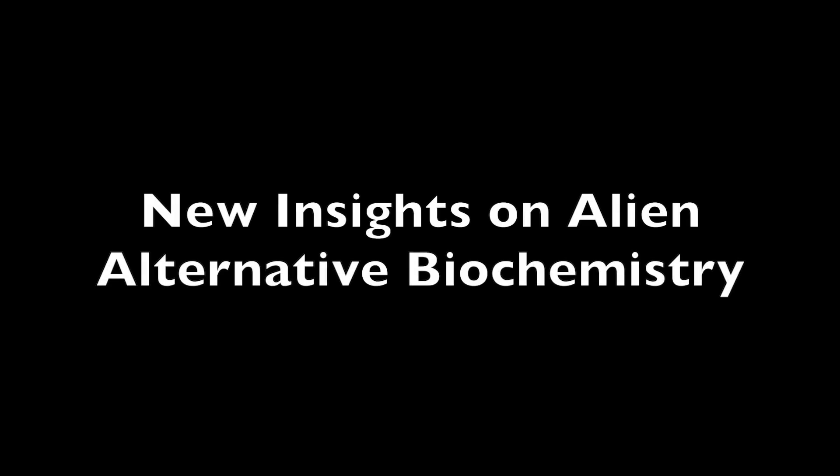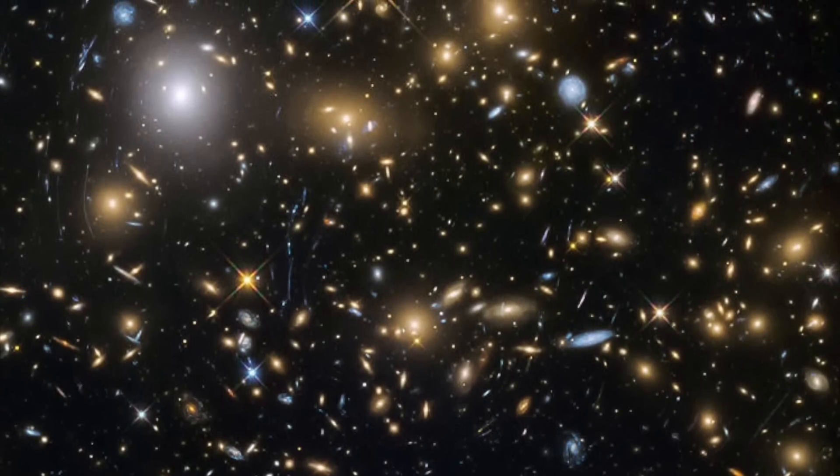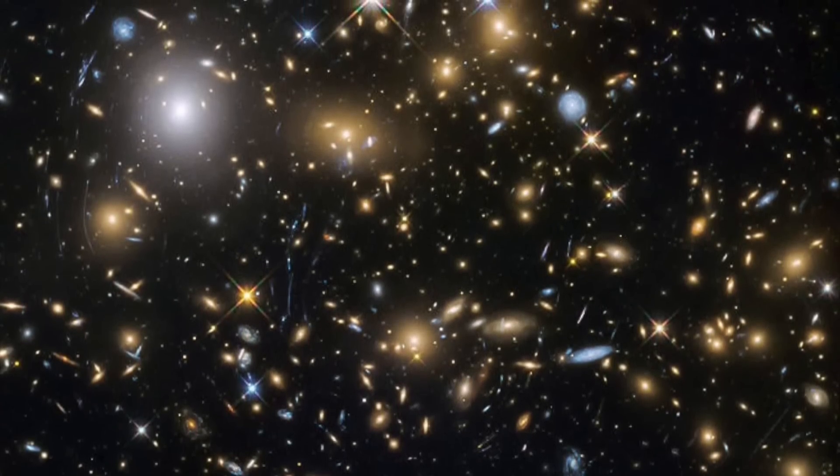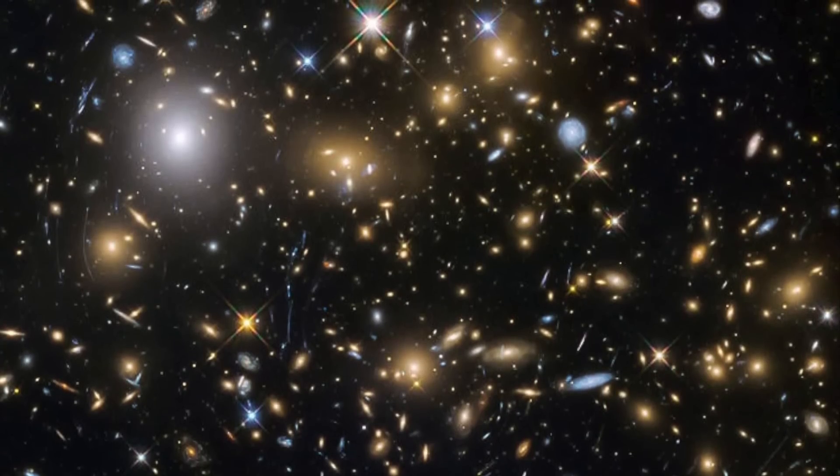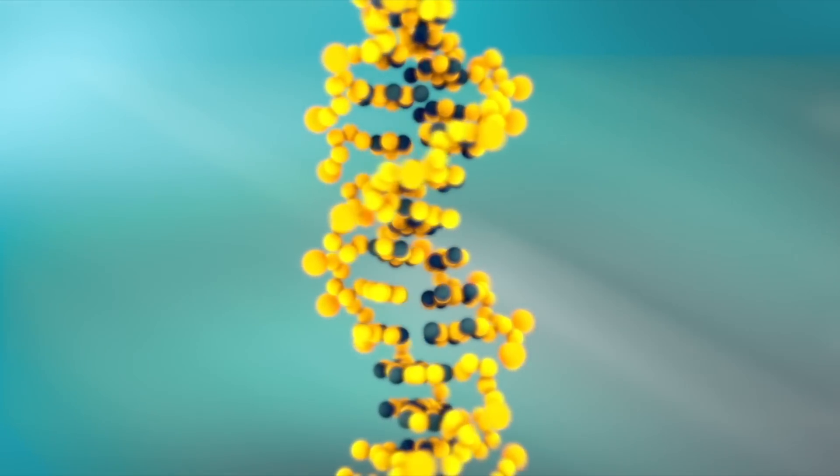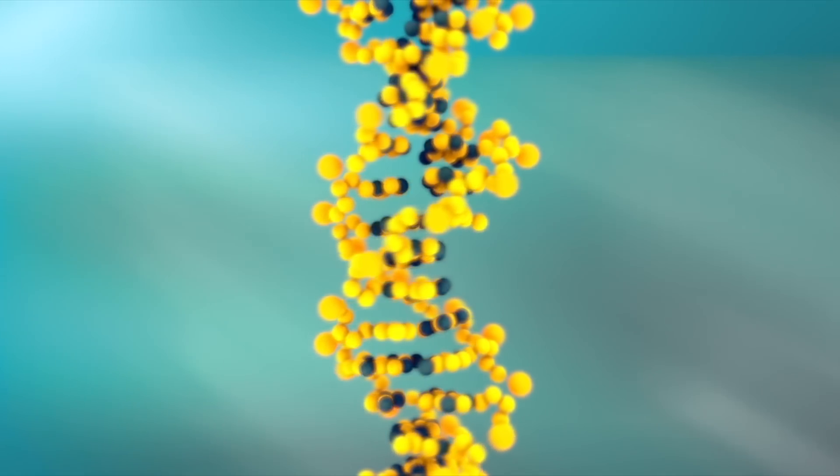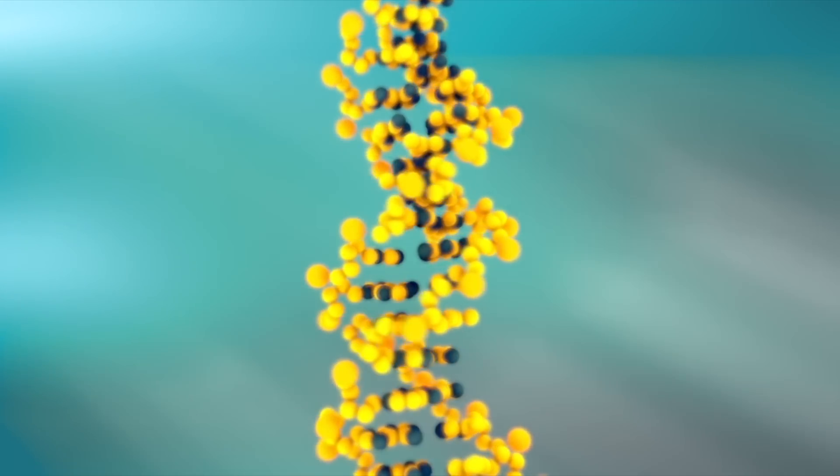Within astrobiology and thinking about alien biochemistry, there is a known bias. This bias is quite simply that we've only ever seen one brand of life, our own. All life on Earth adheres to a set of rules in chemistry based on carbon that, while successful, may also blind us to the possibilities of life that simply doesn't work like anything on Earth.